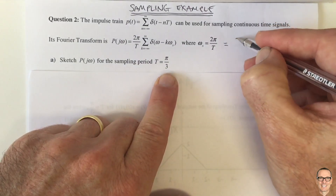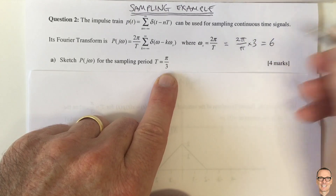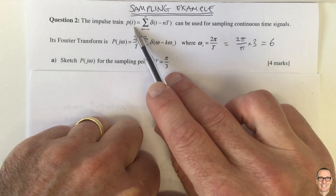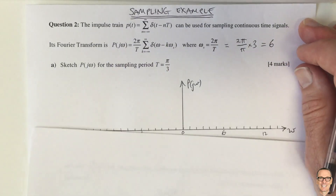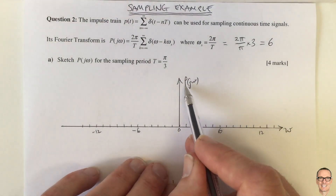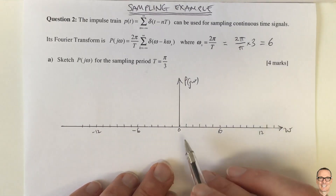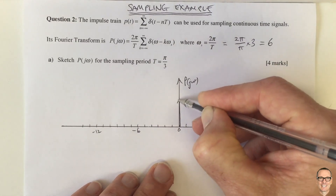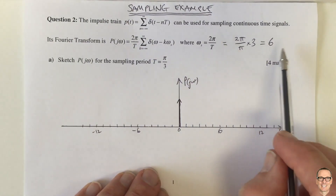In this case, omega_s equals 2π divided by (π/3), which equals 6. So we need to sketch the Fourier transform of our sampling waveform for omega_s = 6. This is a sequence of delta functions. For k=0, we have a delta function at 0, and the height of that delta function is 2π/T, which also equals 6.